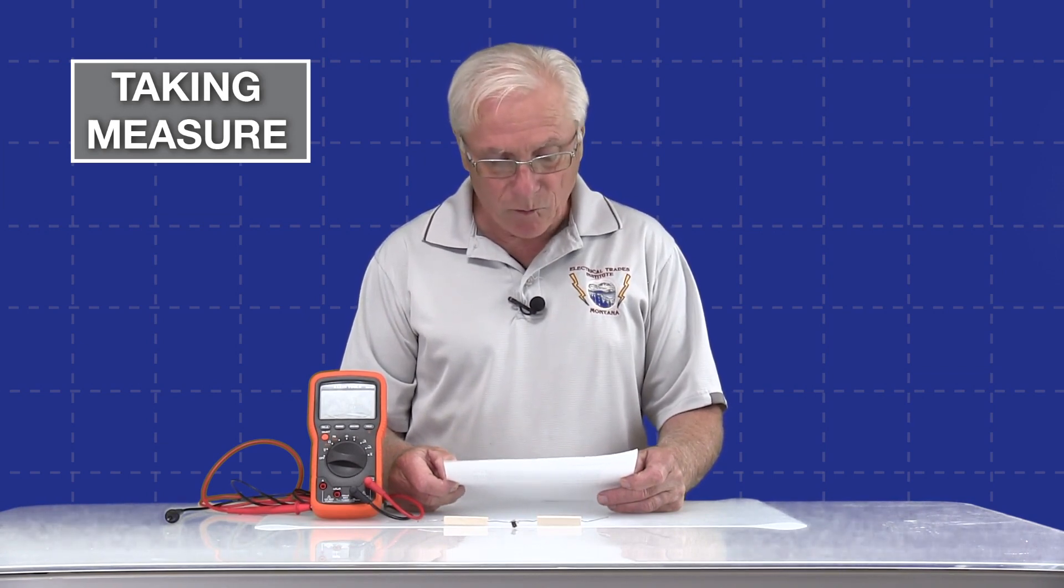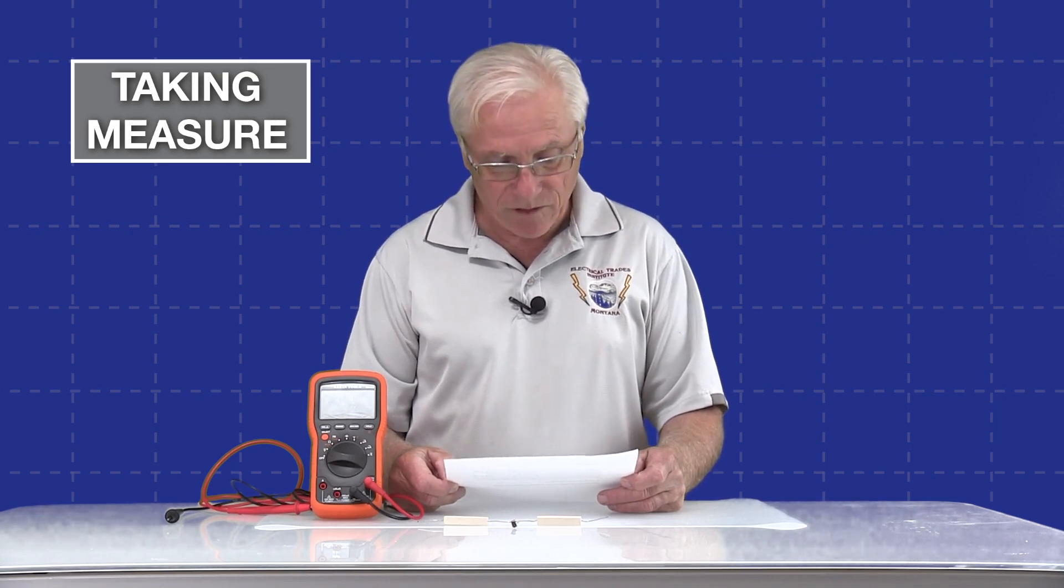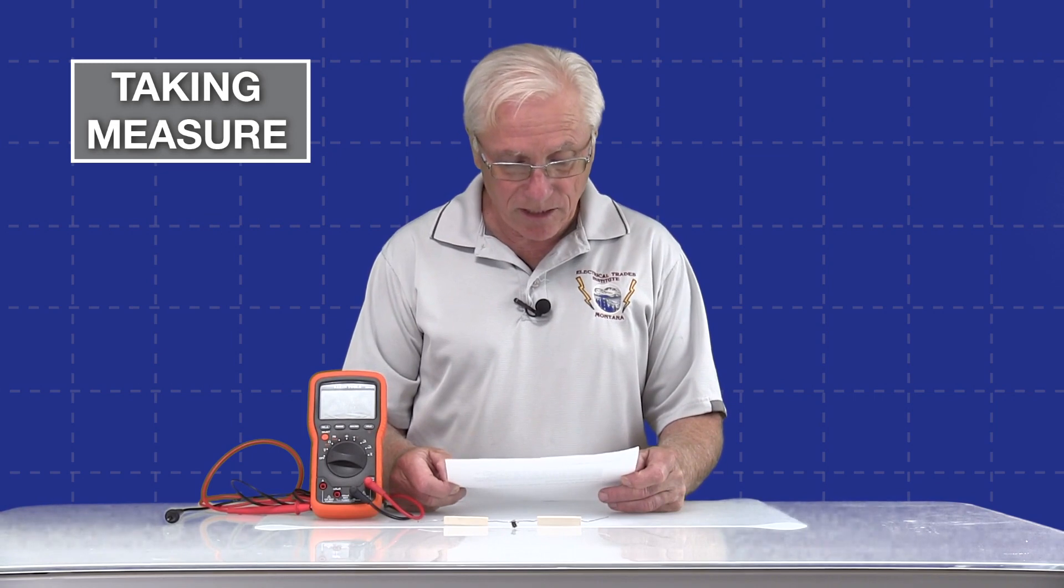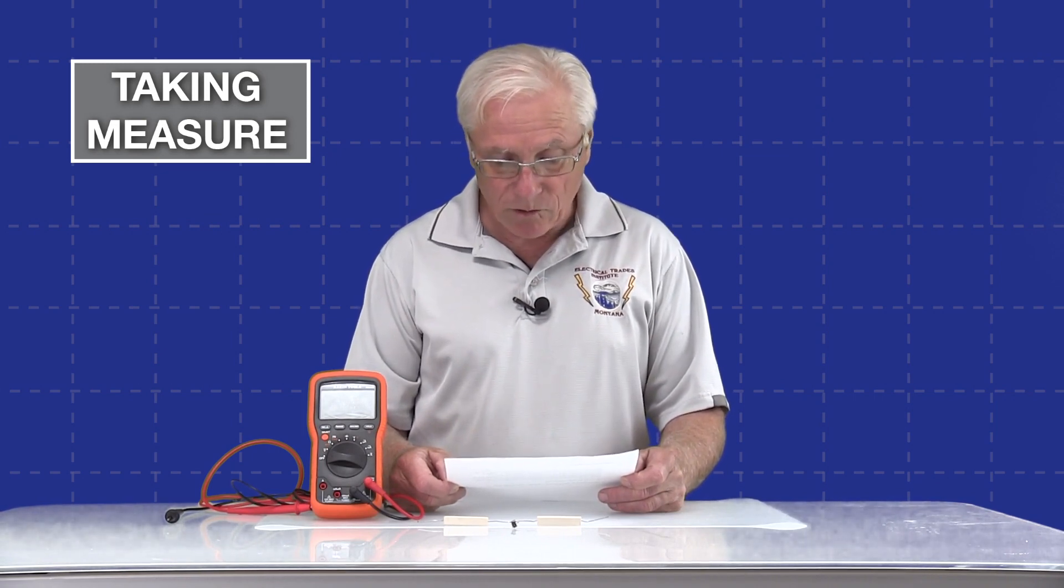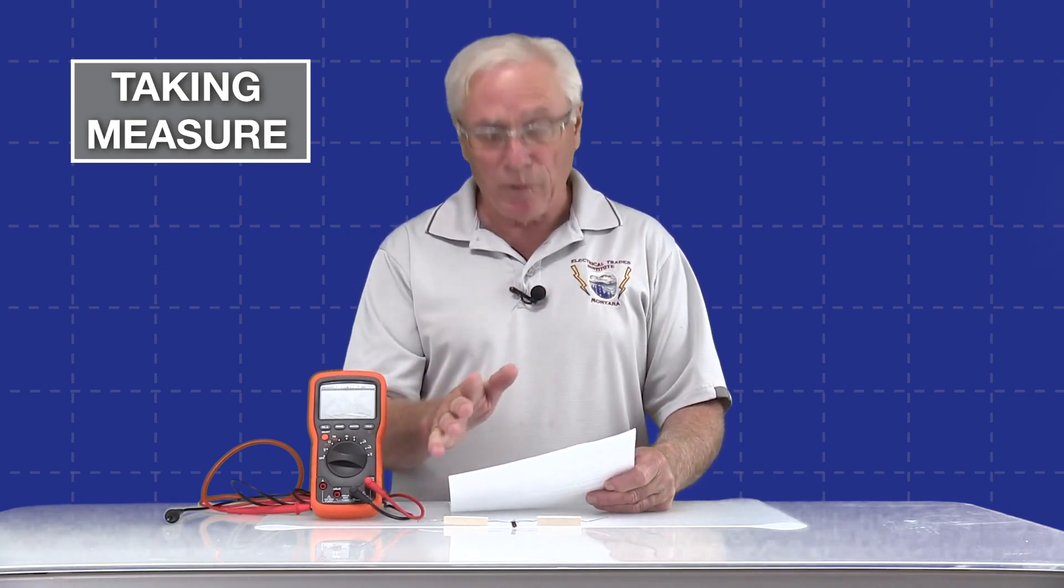Any subsequent measurements will be displayed as the difference between the new reading and the stored reference value. This mode is useful when you want to measure changes in a signal or when you want to eliminate the effect of a known offset or baseline value. But let's put that into Mitch speak.